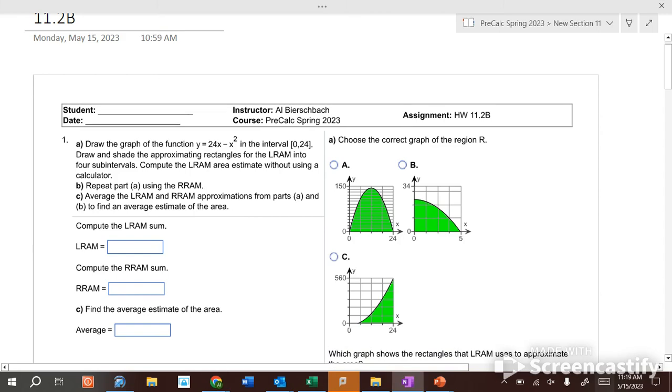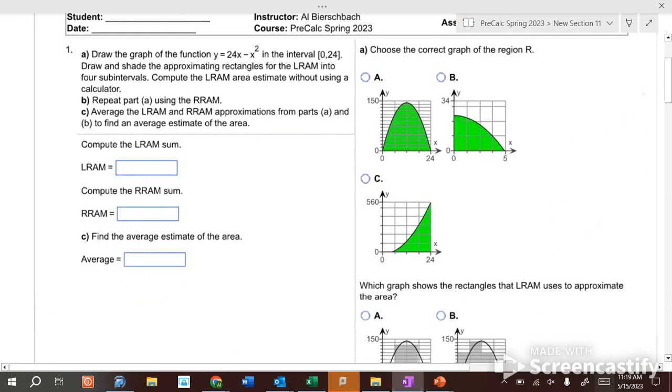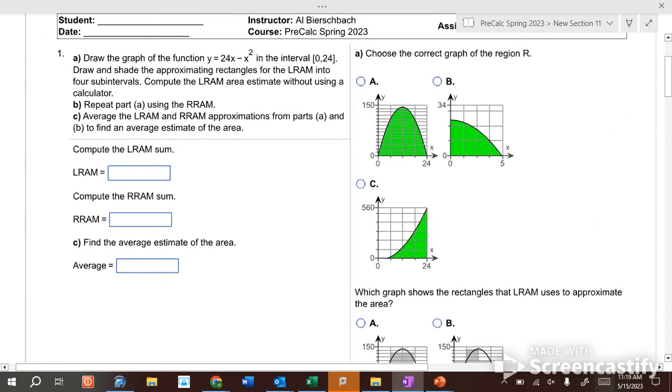Last time we were looking at functions similar to this. We have to first decide which graph is the correct graph of this function. Which one do you think is the correct graph of the function: A, B, or C of 24x minus x squared?